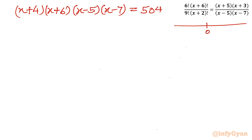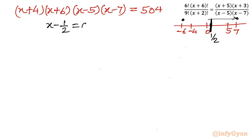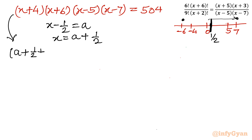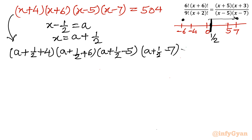Using a number line with origin 0, we place +5 and +7 on the right, and −4 and −6 on the left. The midpoint between −6 and +7 is +1/2. So our substitution will be x − 1/2 = a. Therefore x = a + 1/2. Substituting: (a + 1/2 + 4)(a + 1/2 + 6)(a + 1/2 − 5)(a + 1/2 − 7) = 504.